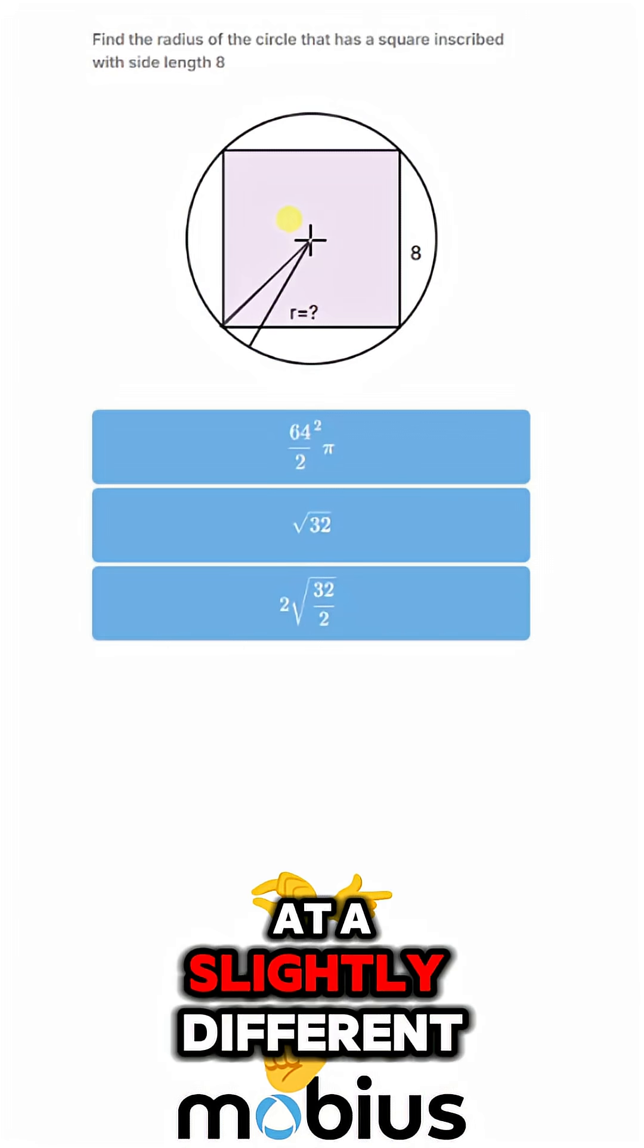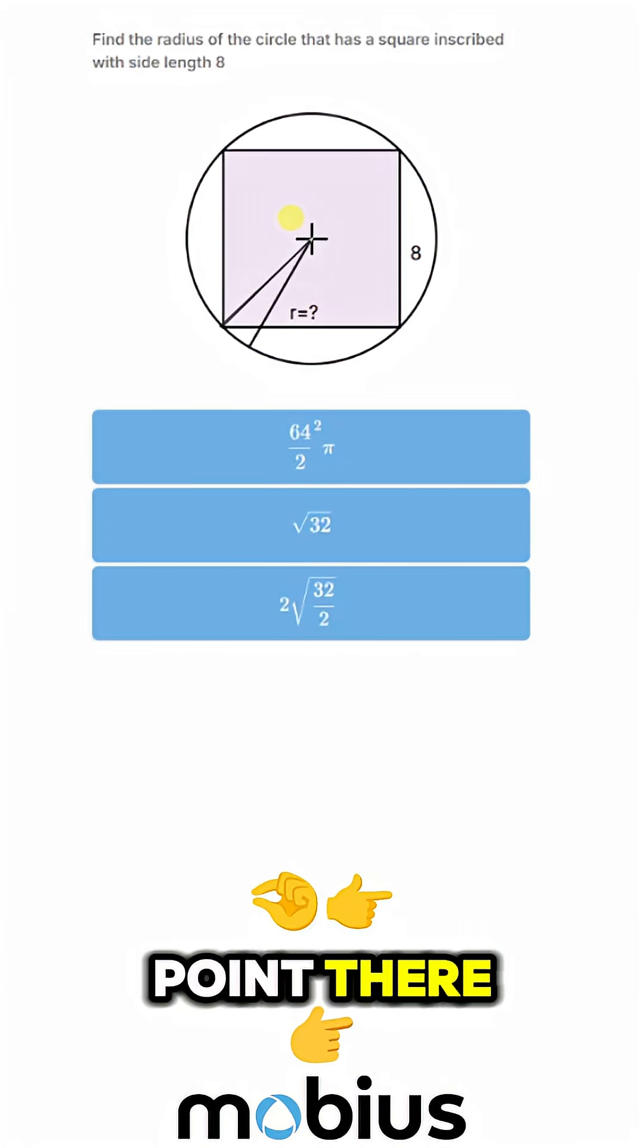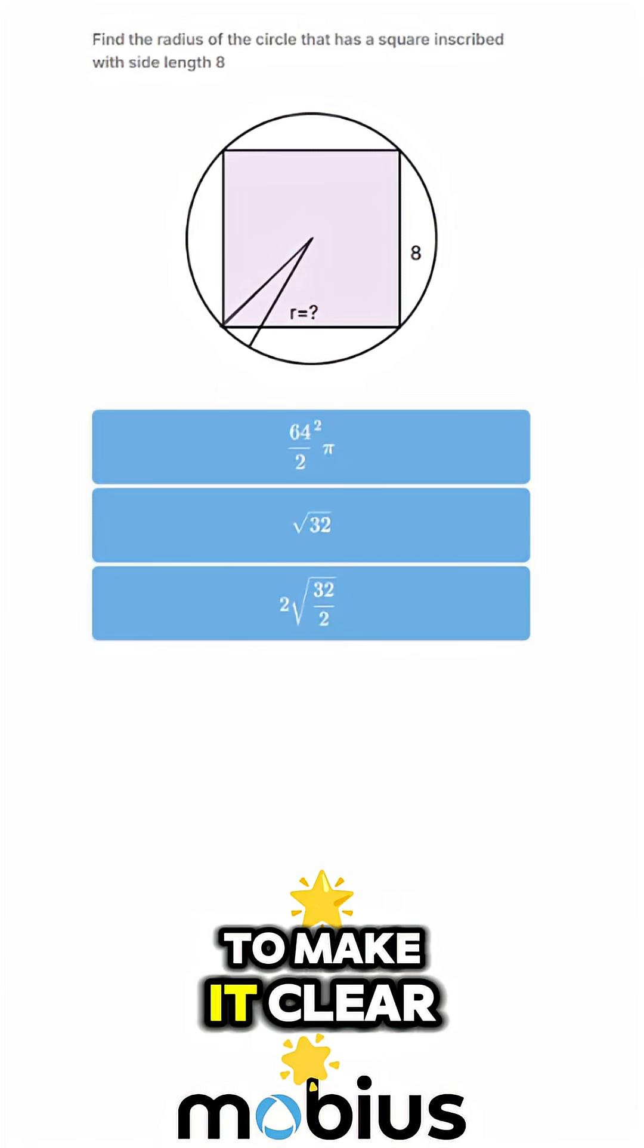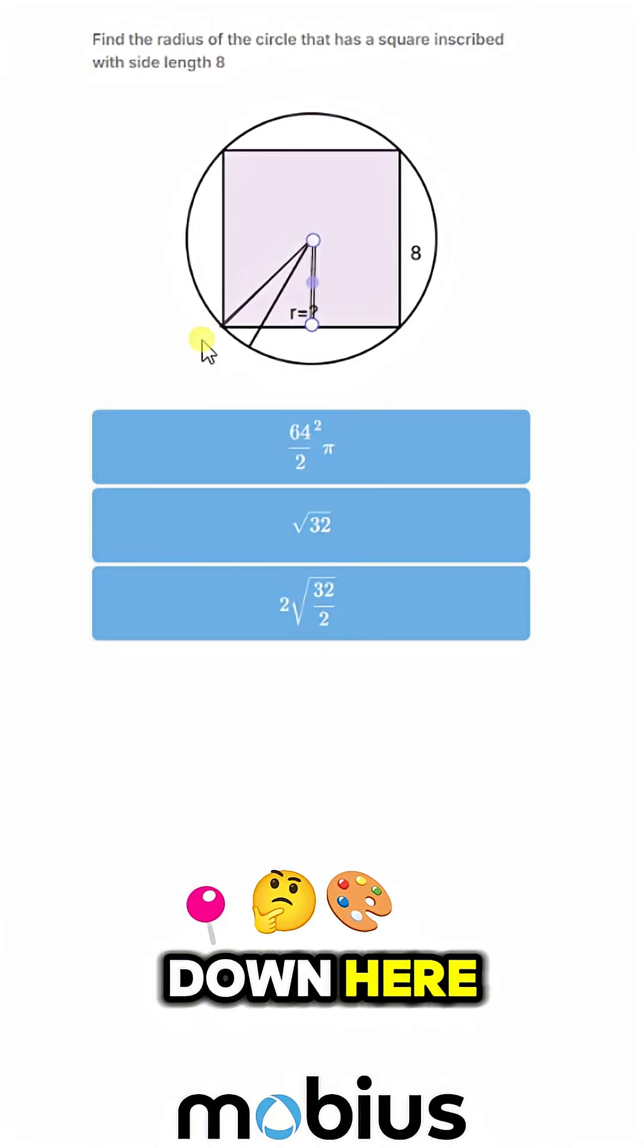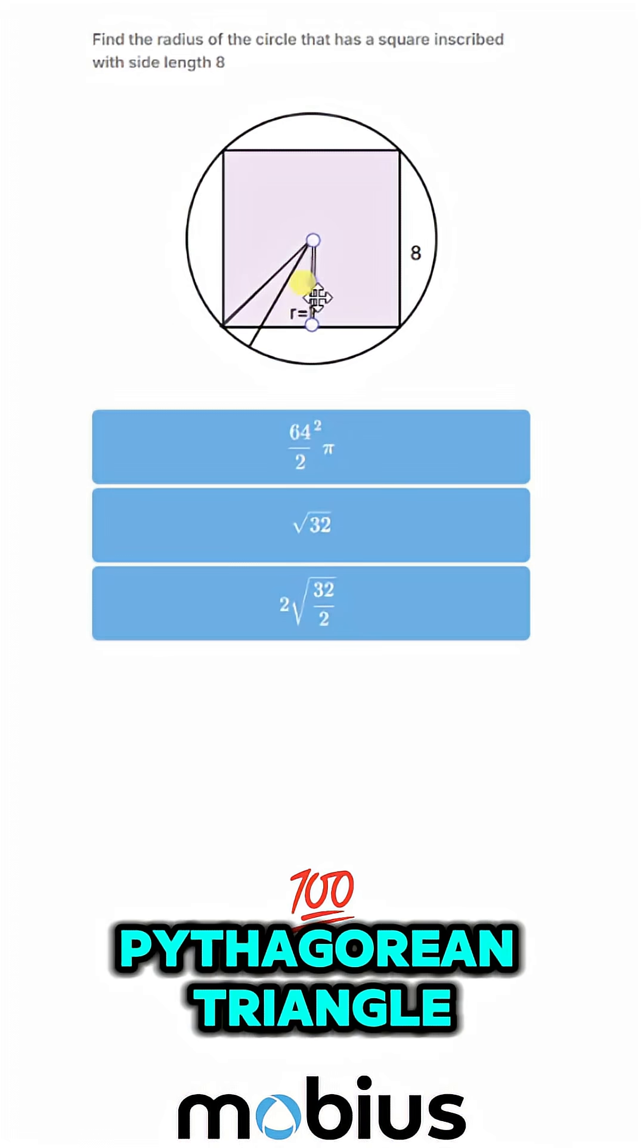I'm going to redraw our radius at a slightly different point to make it clear that what we've got. If I draw perpendicular down here, we've actually got a perfect Pythagorean triangle.